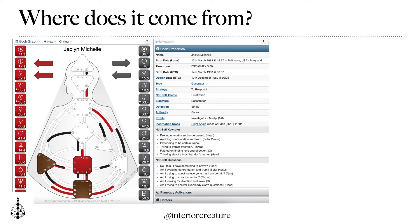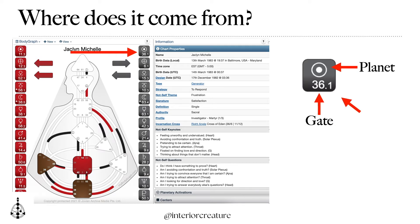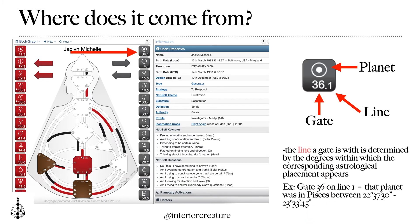So where does our incarnation cross come from? It's whatever gate our conscious sun activates in our chart. My chart's on the screen — there's a big red arrow pointing to the specific box you're going to look for: the conscious sun activation. My conscious sun activated gate 36. That gate gets a special name in human design called our incarnation cross, and when we dive deep into that gate, that's the big theme showing you the what of what you're here to do.